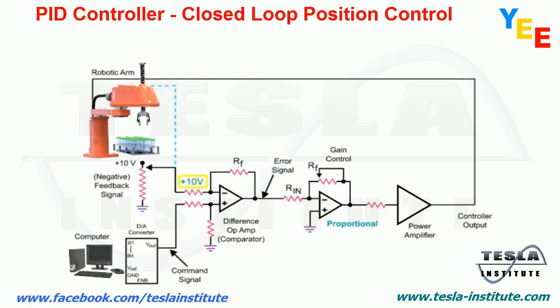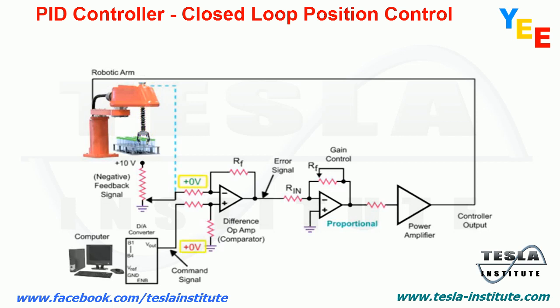When the feedback signal voltage matches the command signal voltage, the arm has reached the desired position. For example, with the arm at the bottle-pick position, the potentiometer output voltage of zero matches the command signal of zero from the computer.